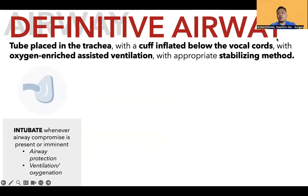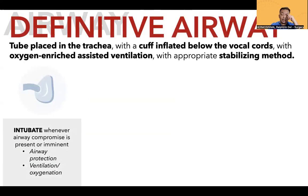A definitive airway is defined as a tube placed in the trachea with a cuff inflated below the vocal cords with oxygen-enriched assisted ventilation and appropriate stabilizing method. You need to intubate whenever airway compromise is present or imminent — for airway protection (e.g., GCS 8 and below, multiple significant craniofacial fractures) or for ventilation and oxygenation problems such as significant lung injuries.